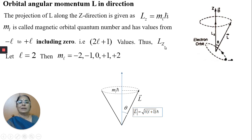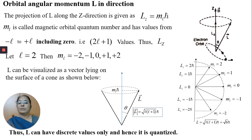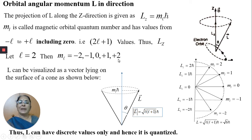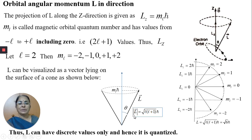For example, if L equals 2, then ml can have the values: −2, −1, 0, +1, +2 — five values in total, satisfying the condition that ml ranges from −L to +L. This L can be visualized as a vector on the surface of a cone. The magnitude of orbital angular momentum is given by √[L(L+1)] h-bar. Thus L can have discrete values only and hence it is quantized.